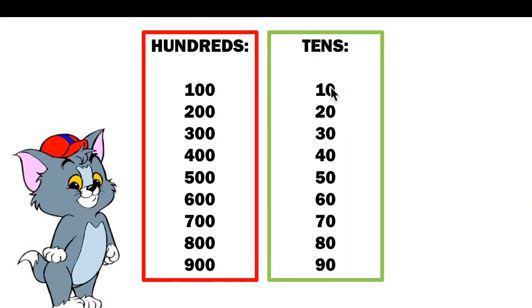Also revise the tens, because we read them differently. One ten we say ten. Two tens — 20. Three tens — 30. Four tens — 40. Five tens — 50. Six tens — 60. Seven tens — 70. Eight tens — 80. And nine tens — 90. So be careful with the tens.